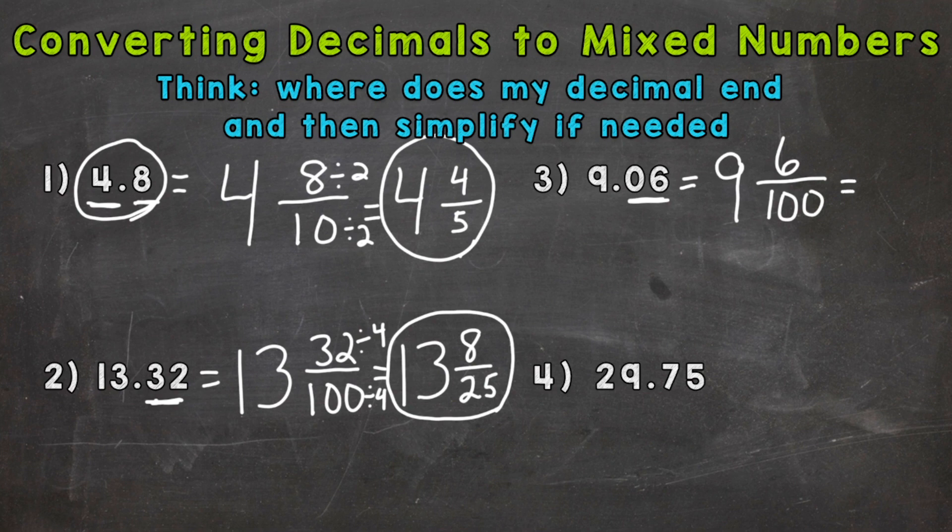Let's simplify. We can divide both six and 100 by two. Two is a common factor. So divide both by two. And we end up with nine and three fiftieths.